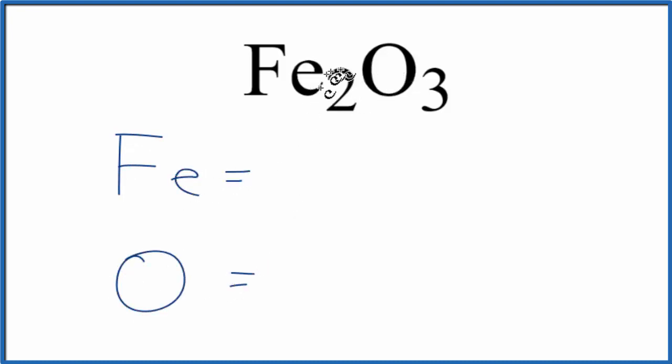For the iron, there's a subscript of 2. That means there are two atoms of iron. For the oxygen, we have a subscript of 3.